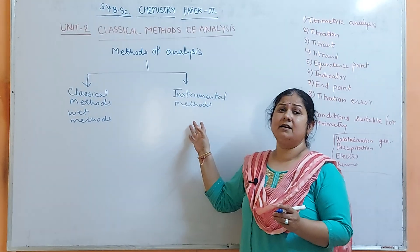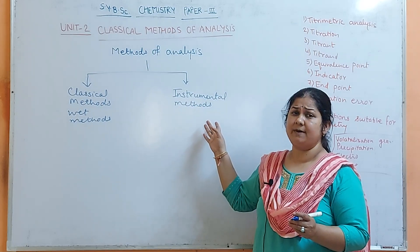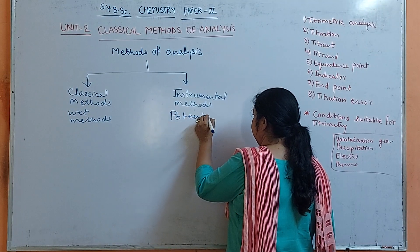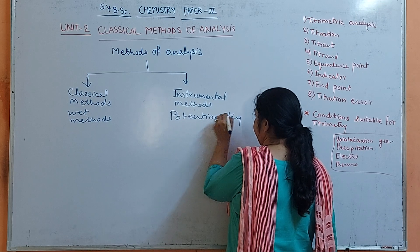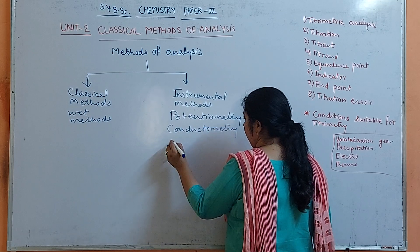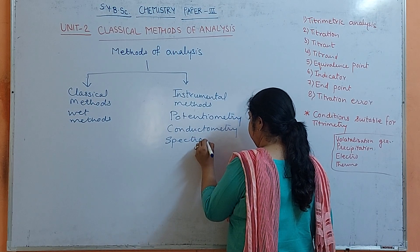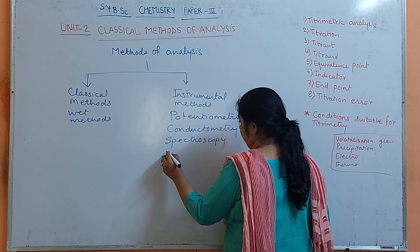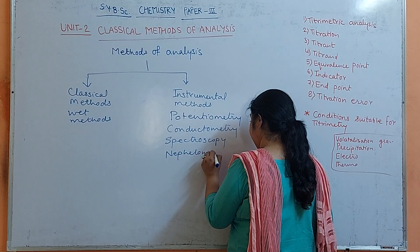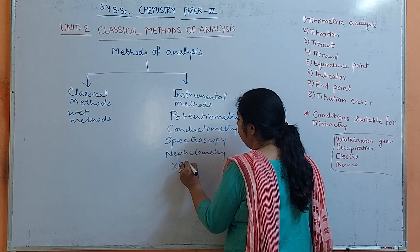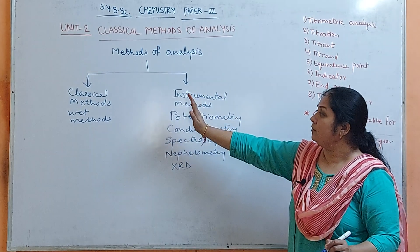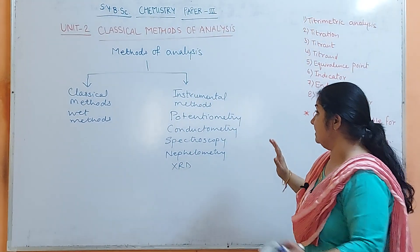Instrumental Methods — as the name suggests, you are going to use some instrument to measure the property. For example, Potentiometry, Conductometry, Spectroscopy, Nephelometry, XRD — all this is included in Instrumental Methods. Here we have to stick to only Classical Methods because this unit is based on only Classical Methods.